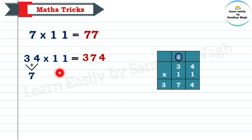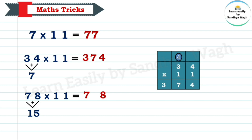Now, if the sum of the digits is equal to 15 — for example 7 and 8 is equal to 15 — what we will do? The answer has two digits, so we write 5 and carry over 1. So, write 5 and 8, then 7 plus 1 is equal to 8. Our final answer is 858.